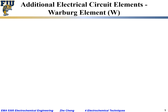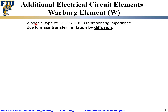We introduced one more circuit element called the CPE or constant phase element. Now let's look at a related element called the Warburg element, or sometimes the doubly Warburg element. It is a special type of CPE with the exponent equal to 0.5. It represents impedance due to mass transfer limitation by the diffusion process. We quite often use the symbol W for the Warburg element.